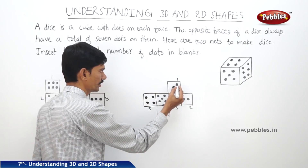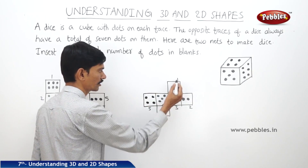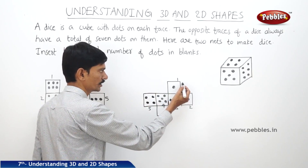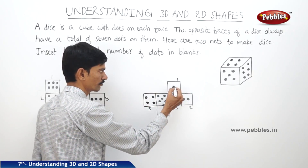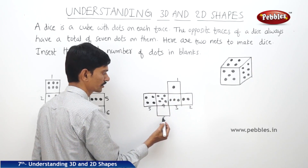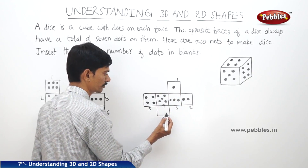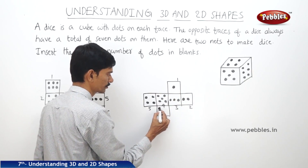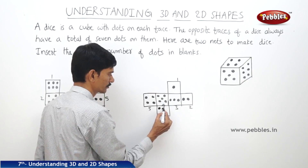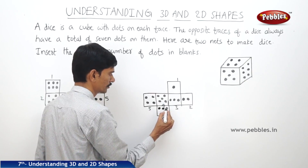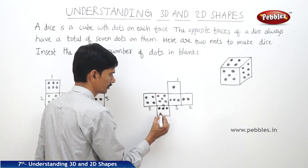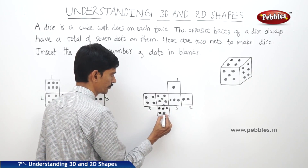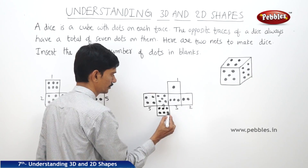And face one and six are the opposite faces. As face one has one dot, then face six will have six dots on it — one, two, three, four, five, and six.